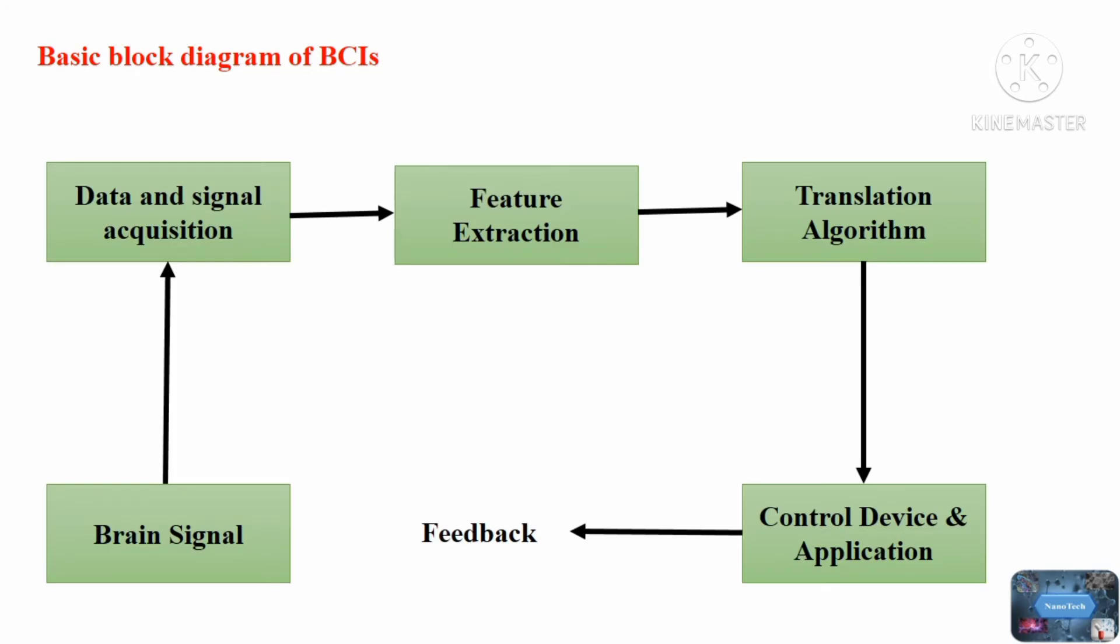Basic Block Diagram of Brain-Computer Interface. This is the basic block diagram for brain-computer interface, which consists of three major components, such as signal or data acquisition, signal processing unit, and output device.